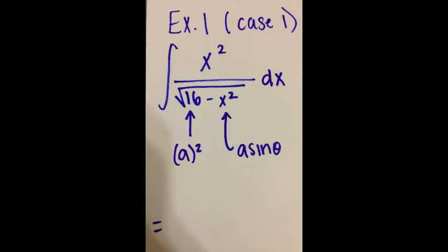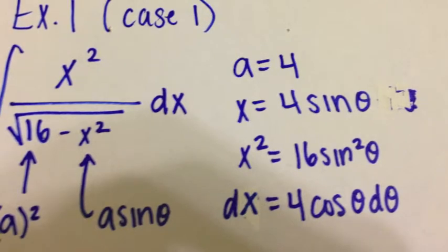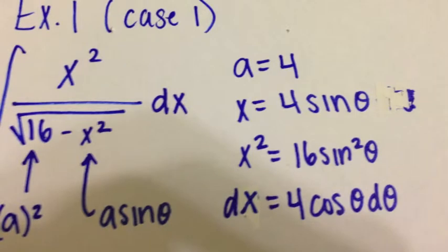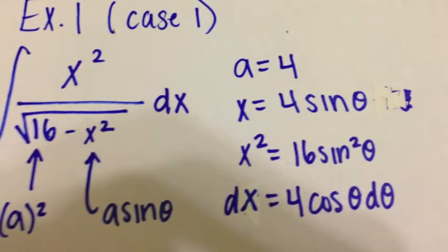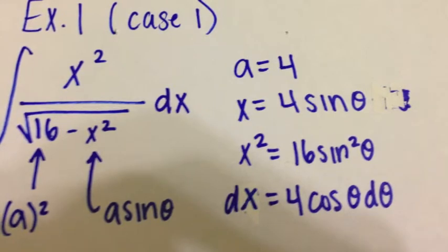The first example we will be doing will be involving Case 1. We have a variable being squared over the radical of an integer being squared subtracting a variable being squared, which fits into Case 1 — where we change x into a sine theta. Since a is being squared, a here is really 4. I always do side work and write everything out. Here I explain that a is 4, x is a sine theta, so you plug in a, which is 4, so it becomes 4 sine theta.